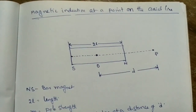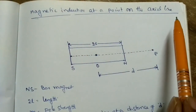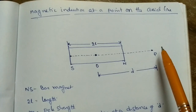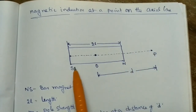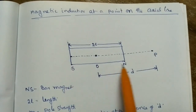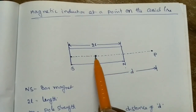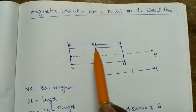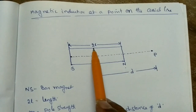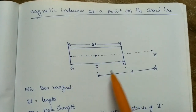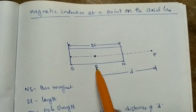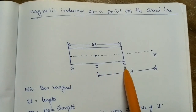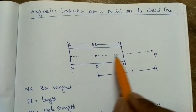My topic is magnetic induction at a point on the axial line. Suppose magnetic induction on an axial line — the axial line is along the magnet, with South Pole and North Pole. This is the midpoint. The length of the magnet is 2L, with North Pole at distance L and South Pole at distance L. So this is the origin — the midpoint of the magnet. S indicates South Pole and N indicates North Pole. This dotted line is the axial line.